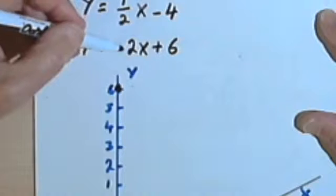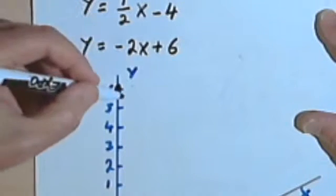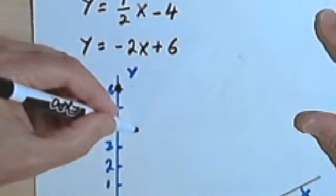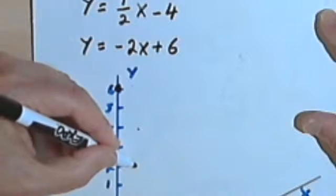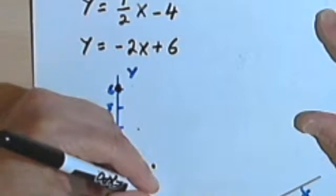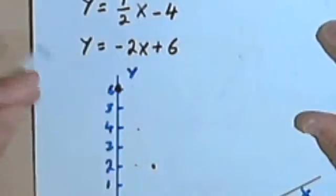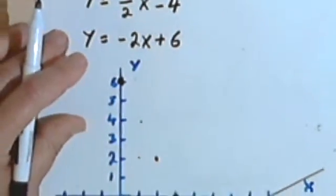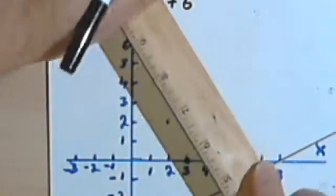So that means down 2 and over 1. Down 2 and over 1. Down 2 more and over 1. Down 2 more and over 1—that'll put us right here. And I'm going to connect these dots as well.